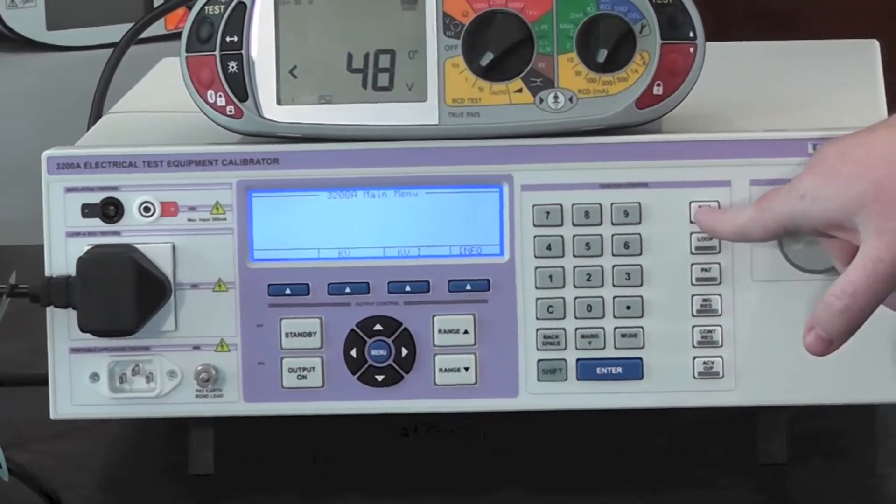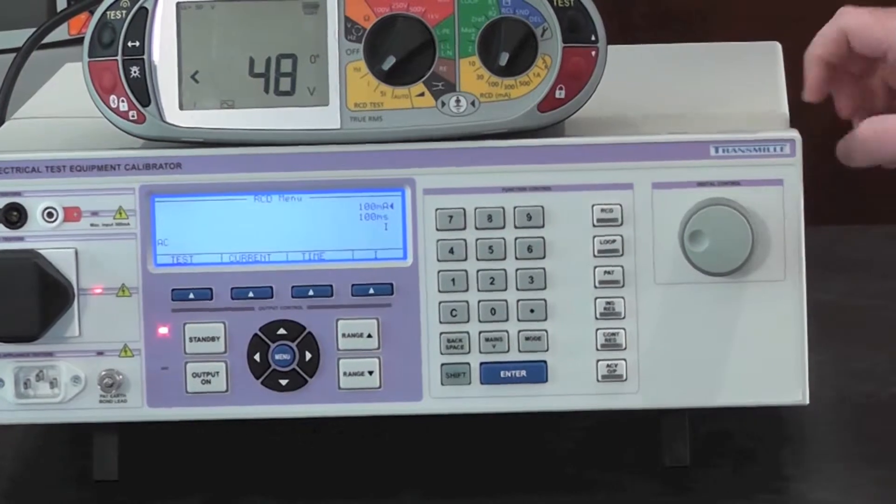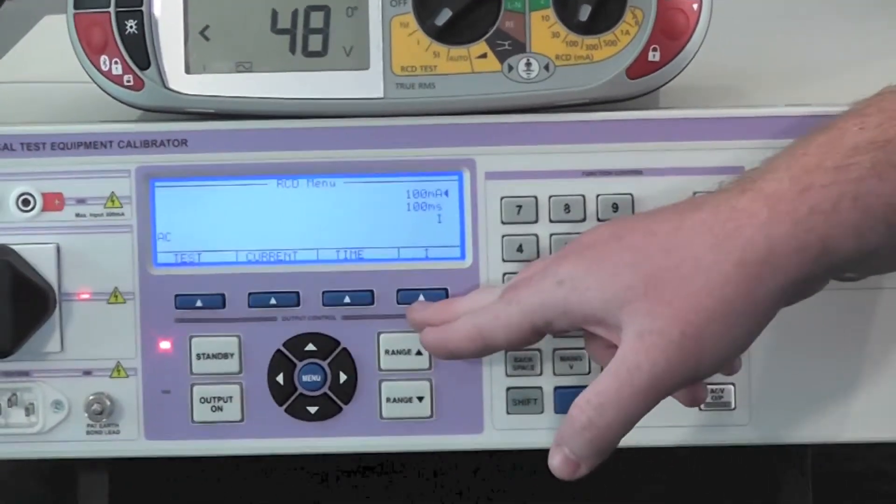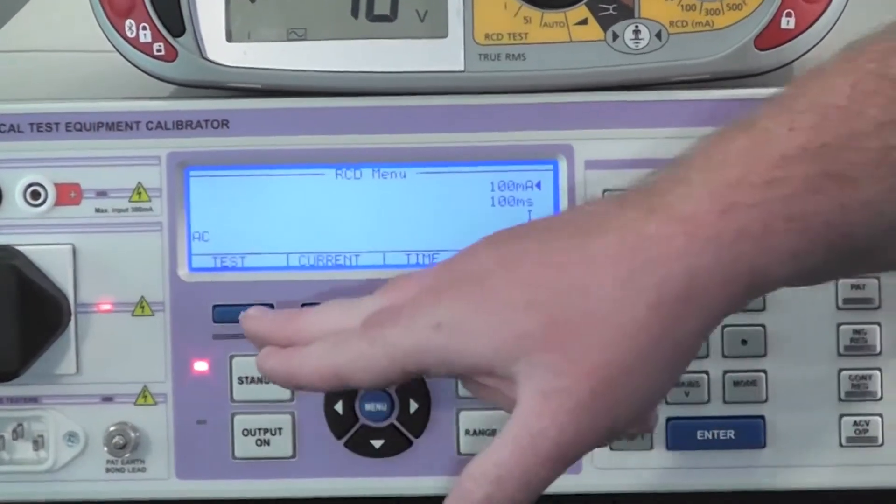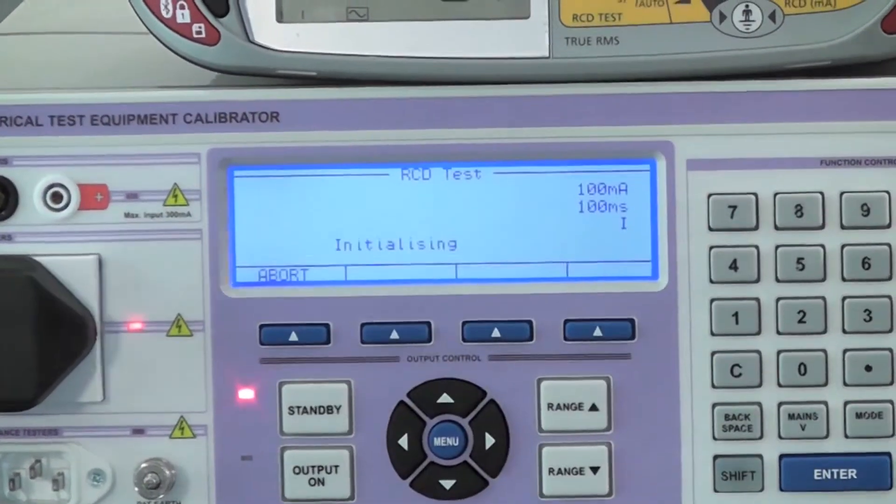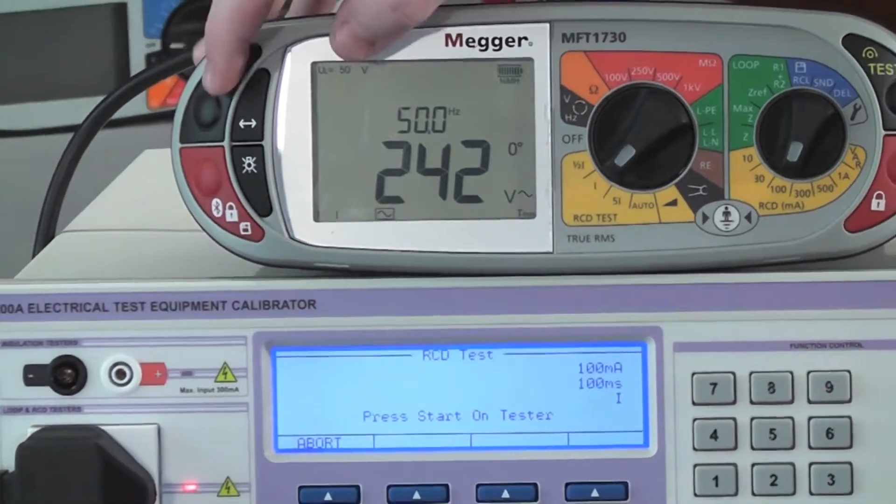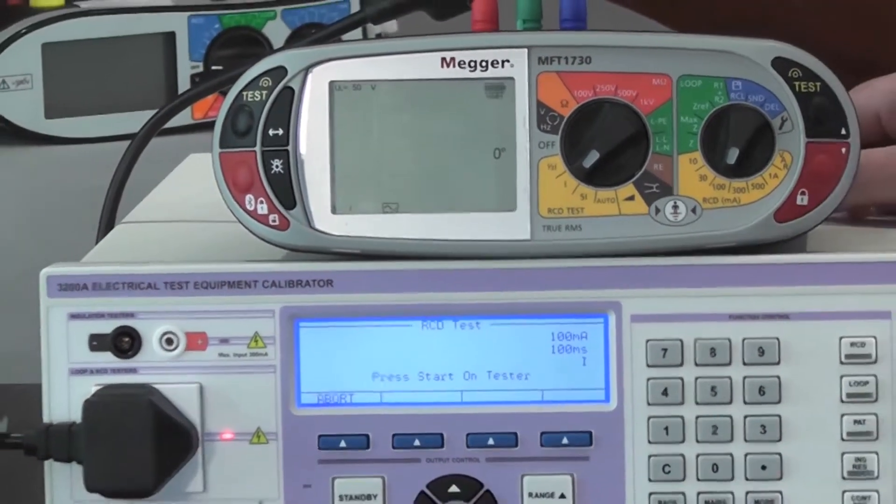Using the dedicated RCD key you can then select the current, the time and the current mode required. Simply press test, wait for the RCD tester to be ready and press test on the RCD tester.